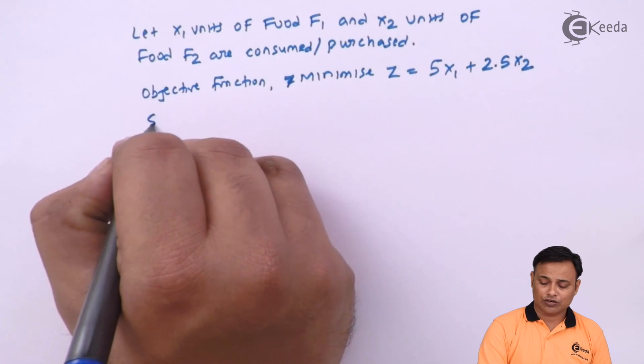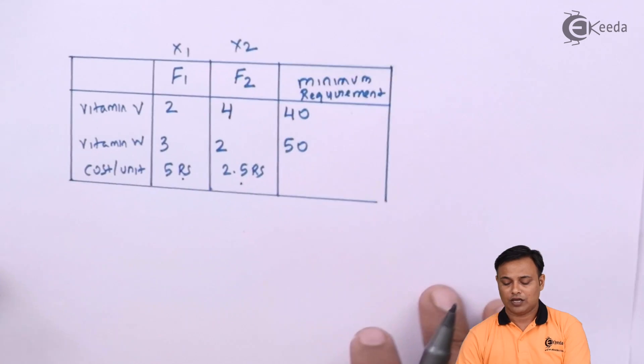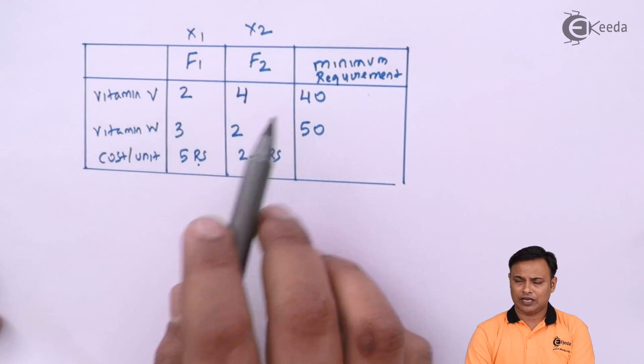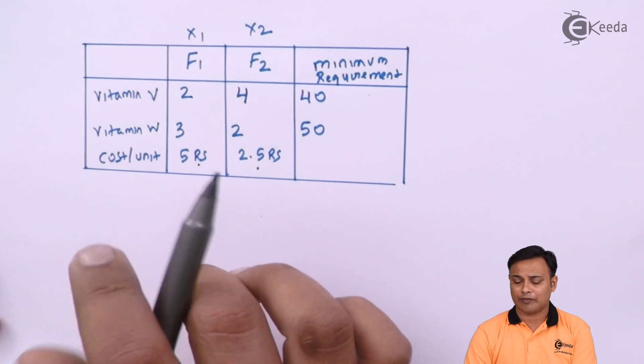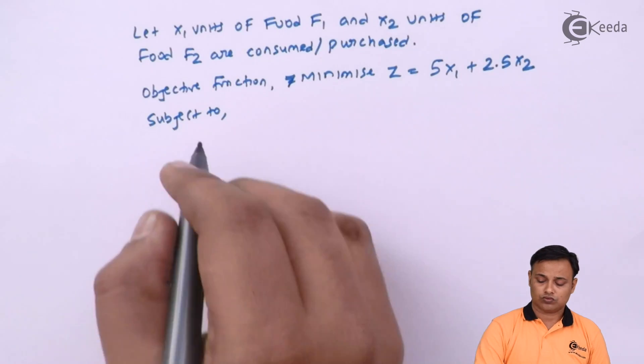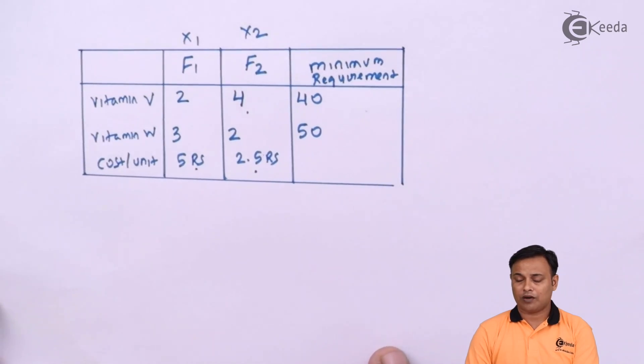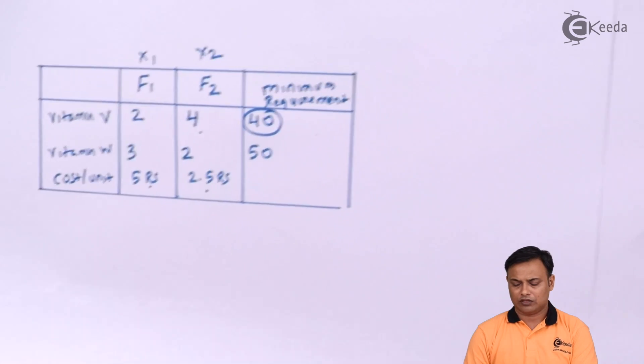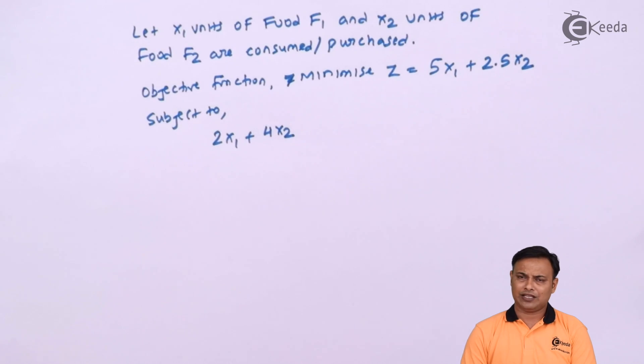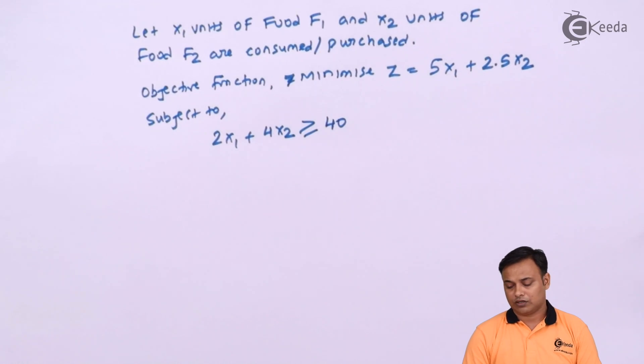This is my objective function. We have to minimize the cost subject to. By writing subject to we are putting the conditions, we are putting the constraints. What are my constraints? My first constraint is that vitamin V minimum requirement is 40. Minimum 40 units consumption should be there for vitamin V. Here my consumption will be 2x1 plus 4x2. What is my overall minimum requirement? 40. So, minimum requirement 40 simply means that I should make 40 or more than 40. Making anything less than 40 won't satisfy the minimum requirement. Therefore, the sign will be more than or equal to 40.